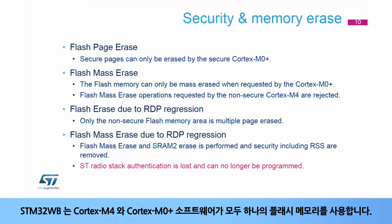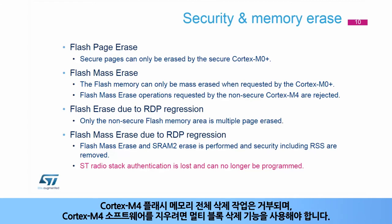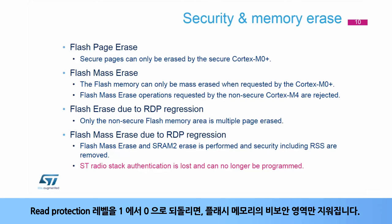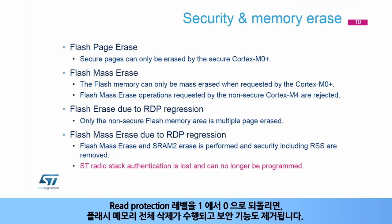The STM32WB has a single flash memory for both the Cortex-M4 and Cortex-M0 Plus software. The Cortex-M0 Plus security prevents Secure Flash Memory pages from being erased by the Non-Secure Cortex-M4. A Cortex-M4 Flash Mass Erase operation will be rejected, and a Multiple Block Erase has to be used to erase the Cortex-M4 software. When regressing the read protection from Level 1 to Level 0, only the Non-Secure part of the flash memory will be erased, and the Secure Cortex-M0 Plus software will be retained.